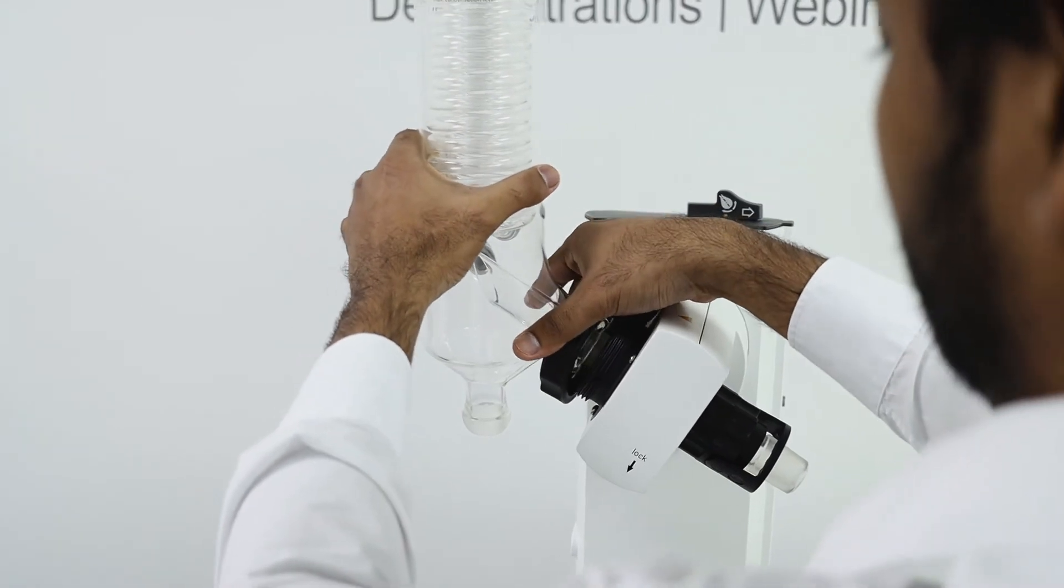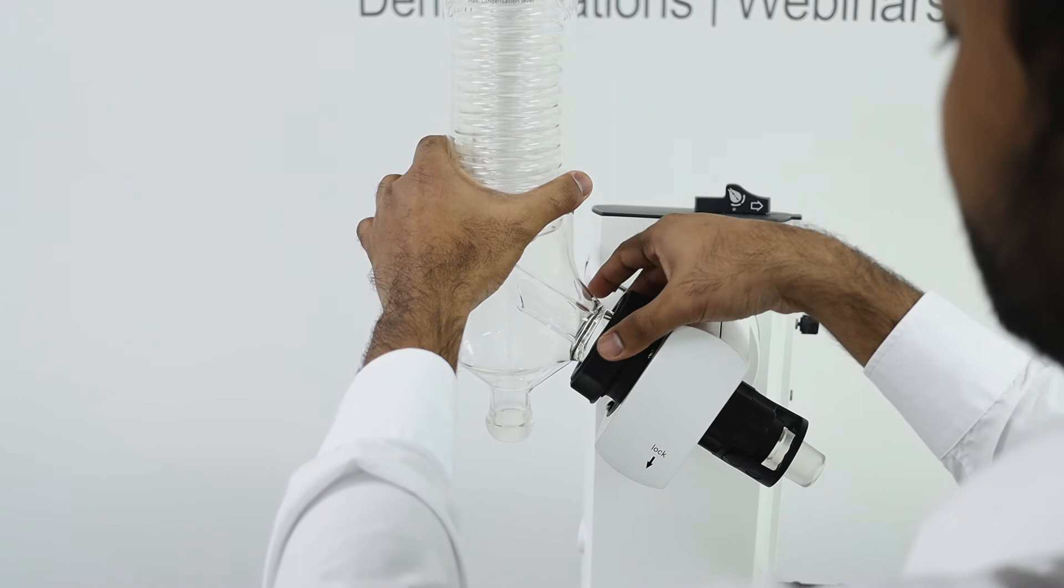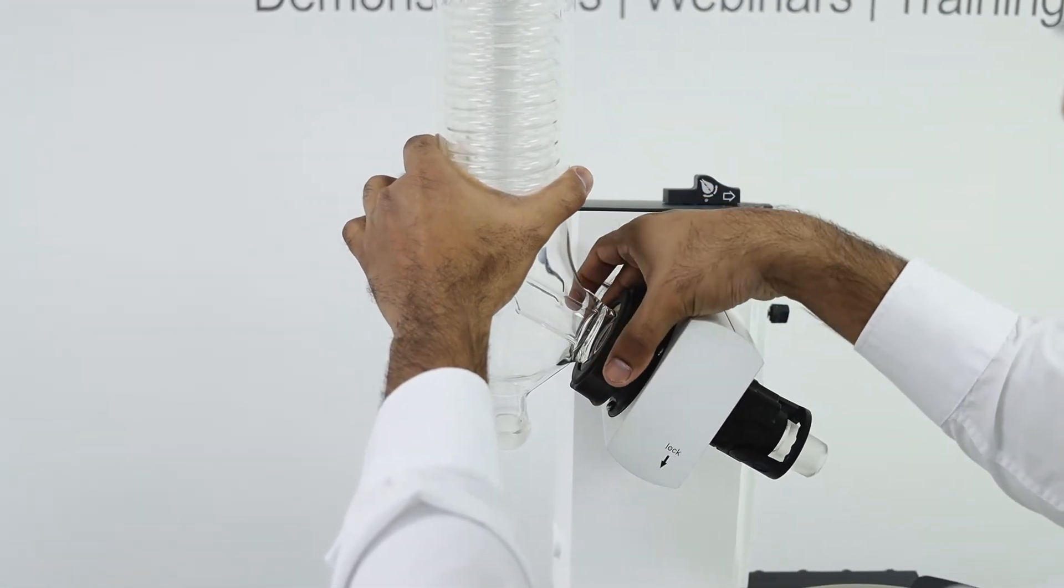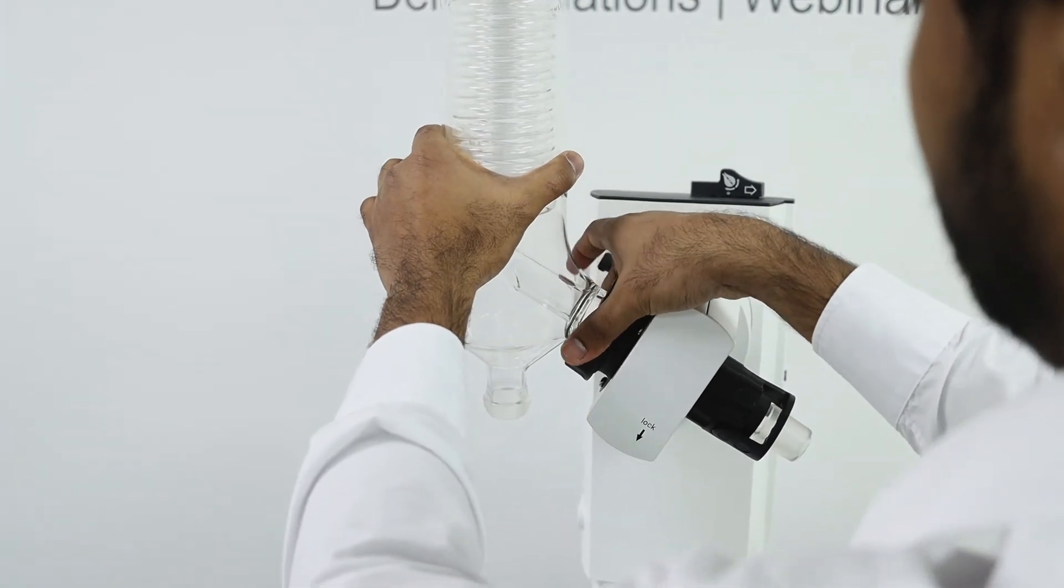Then you reattach your condenser. So a tip for reattaching the condenser is that the locking nut should screw on very easily. If it doesn't then you just want to adjust your condenser so it sits nice and flush against the drive.